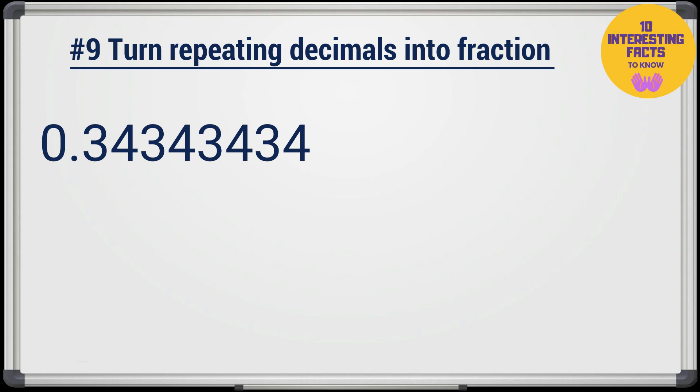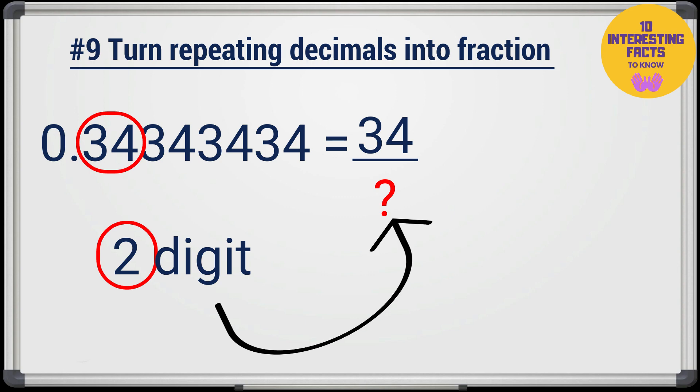Let's check another example to make it clear. If the number is 0.34 recurring, the repeating number is 34 and it is a 2 digit number. So, in fraction form, it will be 34 over 99.